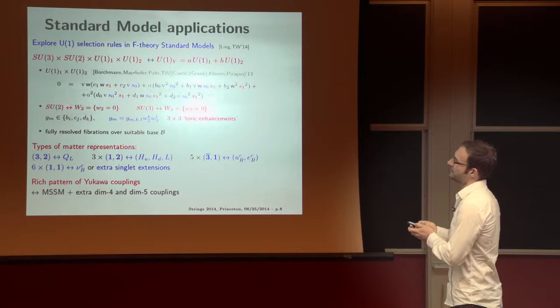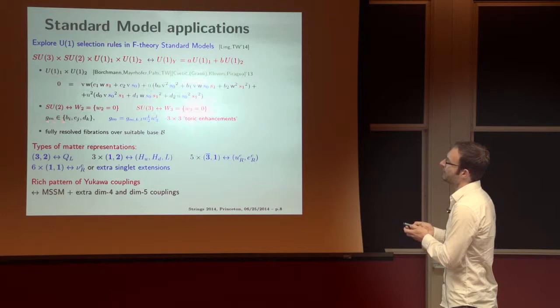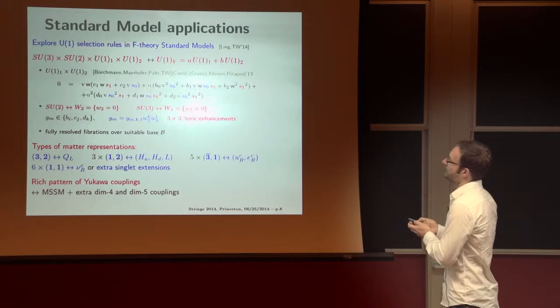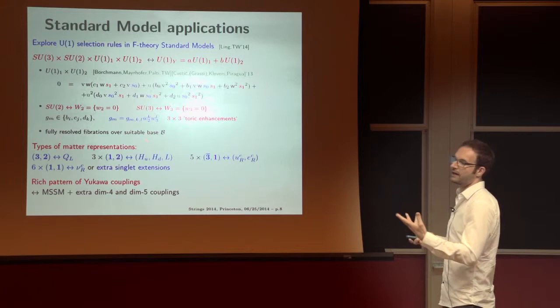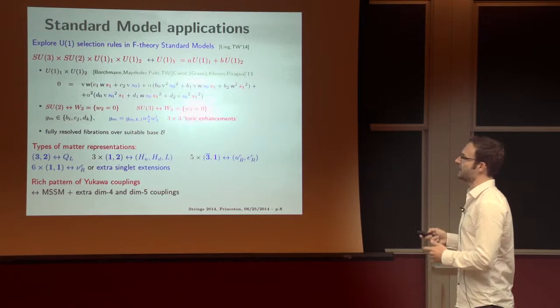In addition, now, we need to engineer an SU(2) and an SU(3) singularity over two independent divisors. There are various ways to do this. We chose the toric way by simply restricting or factorizing these coefficients in our fibration in a suitable way. It turns out there are three possibilities to do this for SU(2) and three for SU(3) in this context, so altogether nine possible such toric enhancements. And one can go through them, look at the resolutions in great detail, and therefore construct fully resolved fibrations.